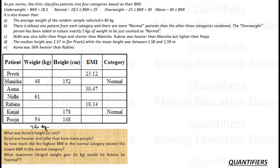There is at least one patient from each category and there are more normal patients than other 3 categories combined. So other 3 categories have at least one patient and normal has more. So normal has to be 4. There are 4 normal patients, one obese, one overweight, one underweight.